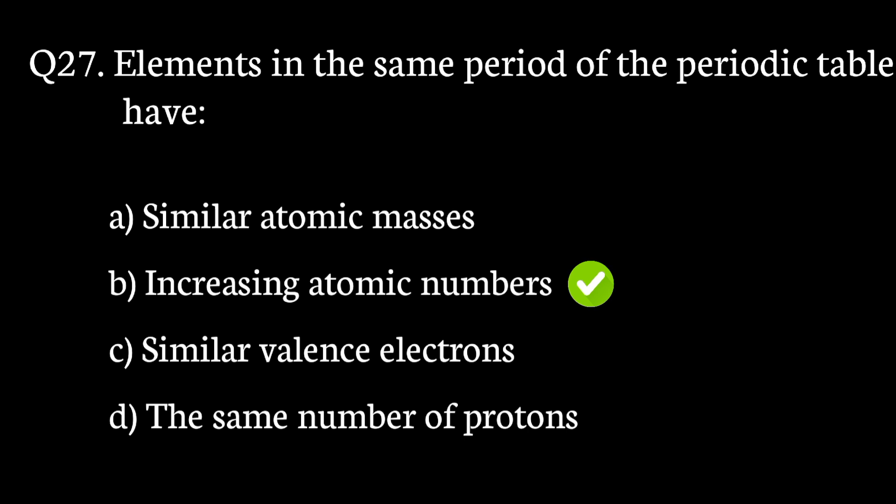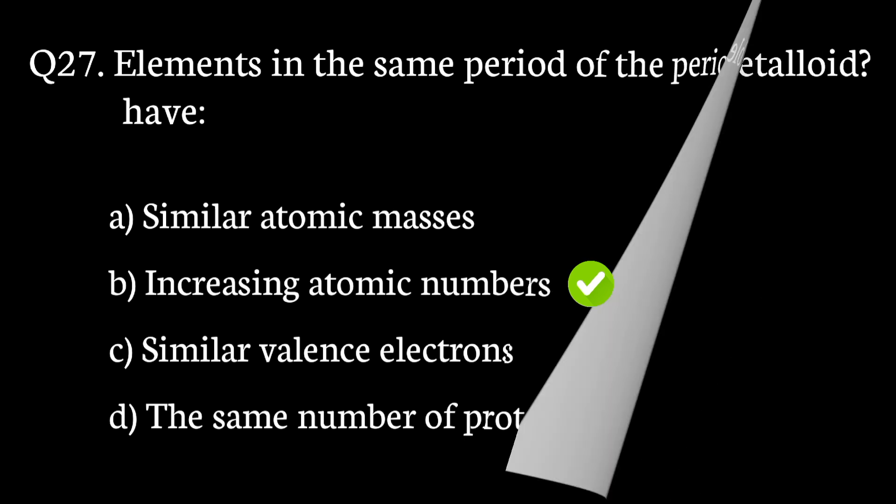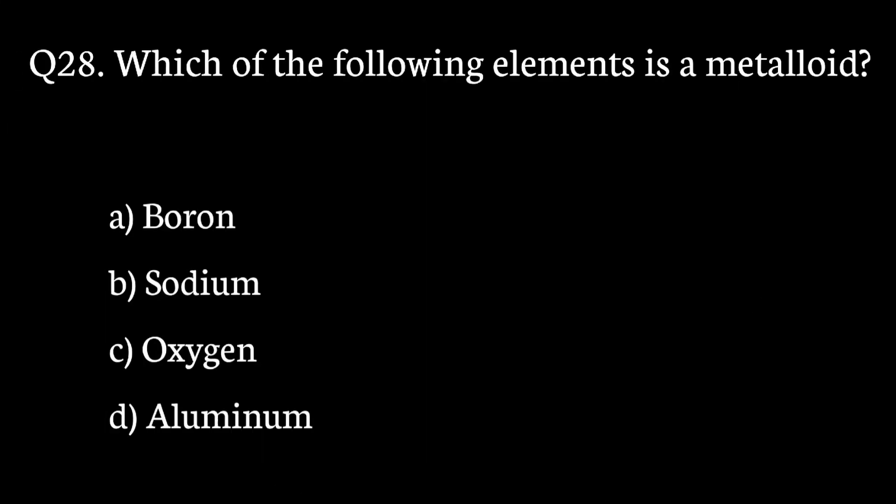Question number 28. Which of the following elements is a metalloid? The correct answer to that question is option A. Boron.